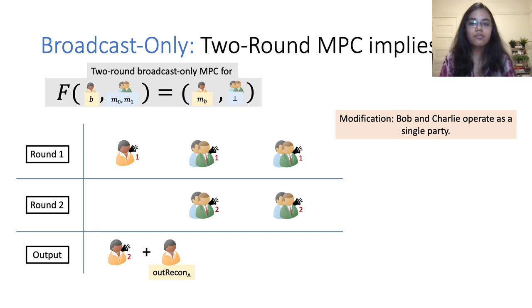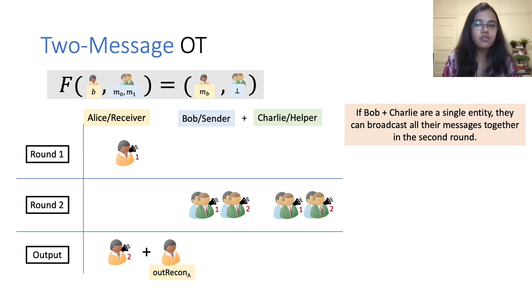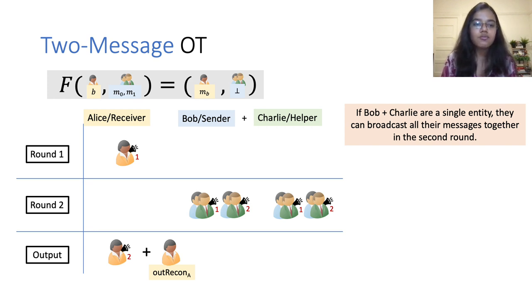Consider a modified protocol where Bob and Charlie operate as a single entity. If Bob and Charlie are indeed a single entity, they can broadcast all their messages together in the second round. This gives us a two-message protocol for the OT functionality, where in the first round only Alice, who acts as the receiver, sends a message, and in the second round Bob and Charlie, who together act as the sender, send a message. Finally, Alice locally computes the output in the output computation phase.